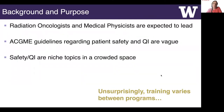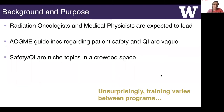Radiation oncologists and medical physicists are leaders within the department, and having a good understanding of quality and safety topics is increasingly becoming recognized as an essential part of radiation oncology practice. National meetings have increased quality and safety content, and more practices are participating in society accreditation programs. However, ACGME guidelines regarding QI and safety are vague, and the depth and breadth of expectations for resident education is ever increasing.